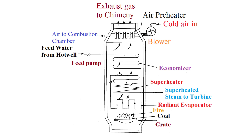In summary, supercritical boiler means the pressure range is above 221.1 bar. Above this pressure, there is no phase separation and no moisture content, so we can also avoid the problems of erosion and corrosion in the tubes.